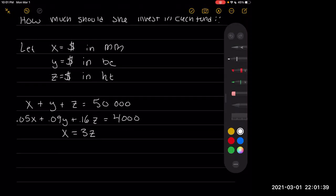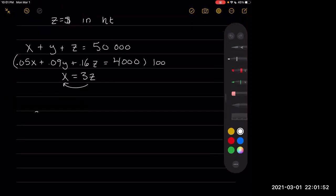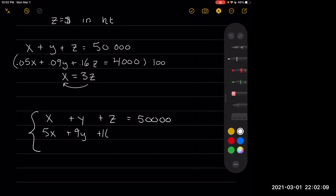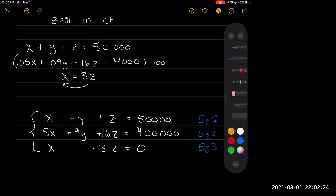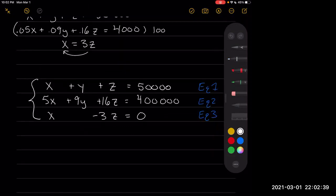The money market X will return 5%, blue chip Y will return 9%, and high-tech stock Z will return 16%, and we would like $4,000 from this. We also know that for every $1 invested in high-tech, we want to invest $3 in money market, giving us our third equation. After simplifying — multiplying the second equation by 100 — our system is: X + Y + Z = 50,000; 5X + 9Y + 16Z = 400,000; and X − 3Z = 0, with these being equations 1, 2, and 3.